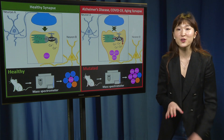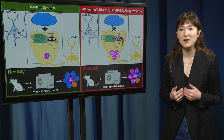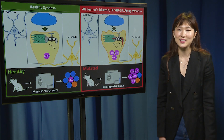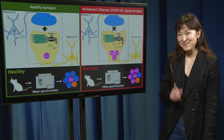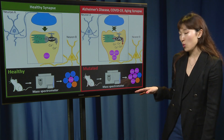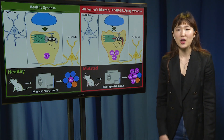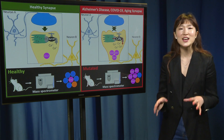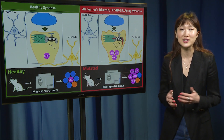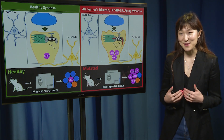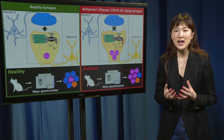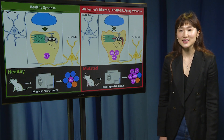This is exciting because for the first time, we can now identify which proteins are increased or decreased due to excess calcium. One especially exciting finding is that there are higher amounts of the protein GLO-1, shown in pink, in the unhealthy synapse. From prior work, we already know GLO-1 helps to eliminate toxic, damaging molecules in neurons. So I hypothesize that GLO-1 is the neuron's defense system against the damage caused by excess calcium.